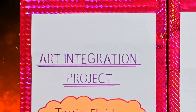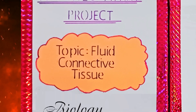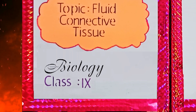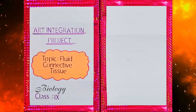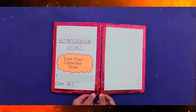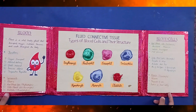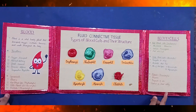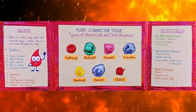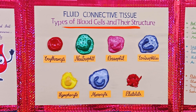Art Integration Project: Topic — Fluid Connective Tissue. Subject: Biology. Fluid Connective Tissue — Types of Blood Cells and Their Structure.